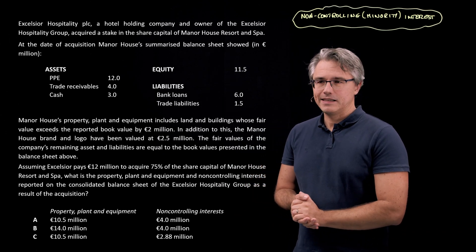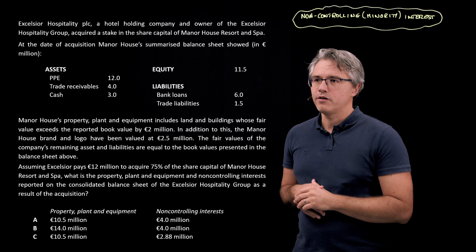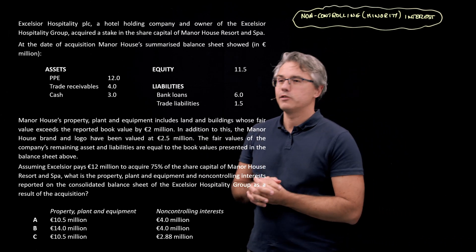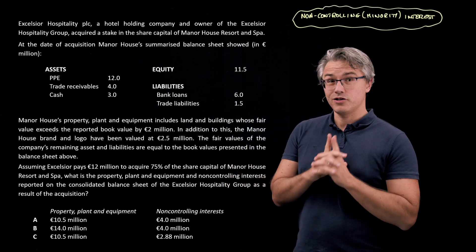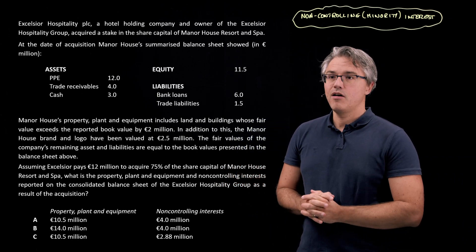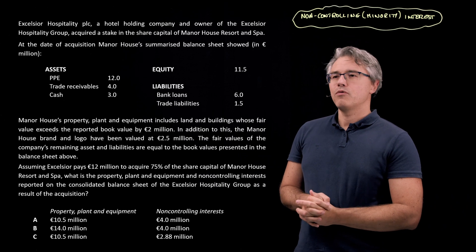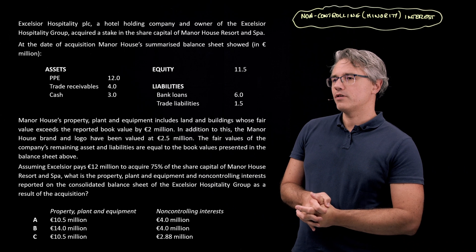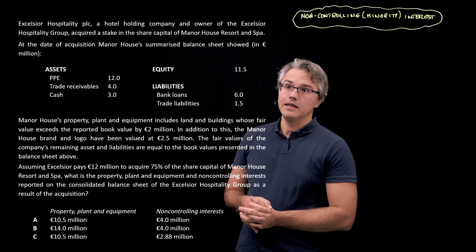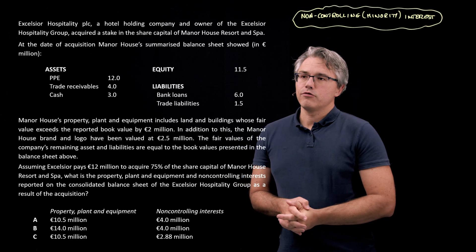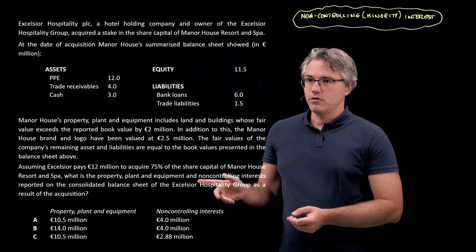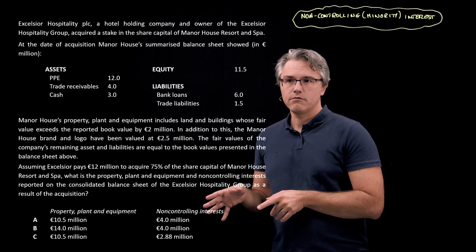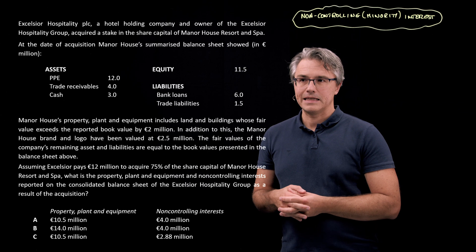This time around, the difference is once again in the final paragraph. Assuming Excelsior, that's the acquirer, pays 12 million to acquire just 75% of the share capital of Manor House Resort and Spa, what is the property, plant and equipment and non-controlling interests reported on the consolidated balance sheet of the Excelsior Hospitality Group as a result of the acquisition? And we've got three options or three combinations for property, plant and equipment and non-controlling interests.